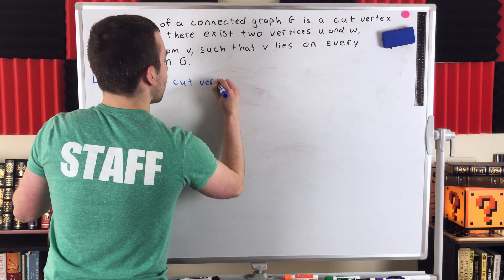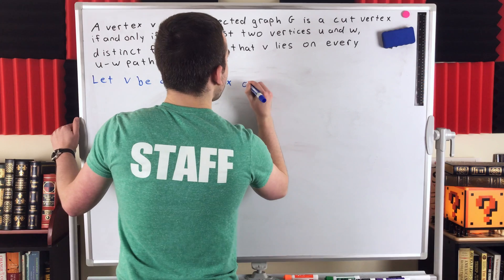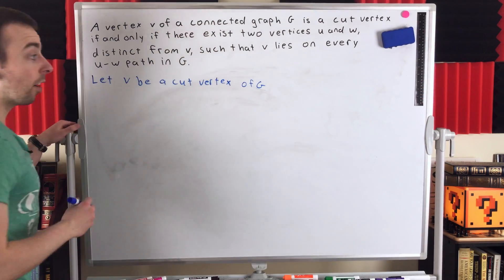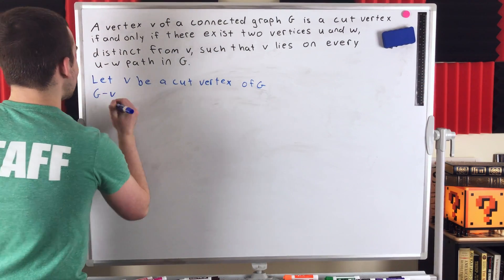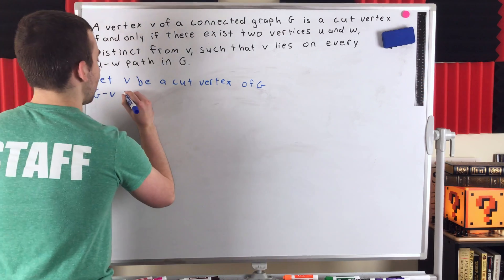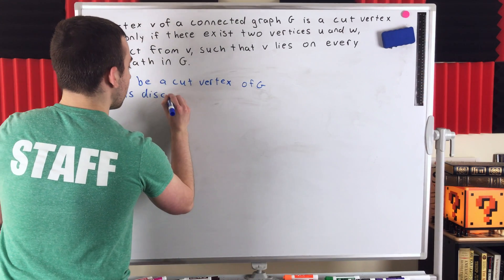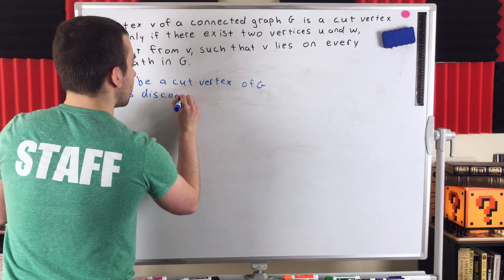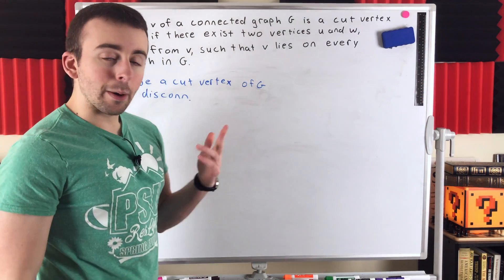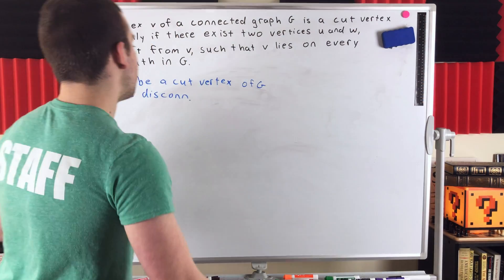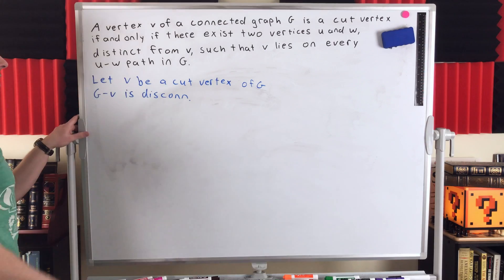V is a cut vertex of G. Thus, by definition of cut vertex, if we delete V and look at G minus V, G minus V is disconnected. So V is a cut vertex of our connected graph G. Therefore, by definition, G minus V is disconnected.